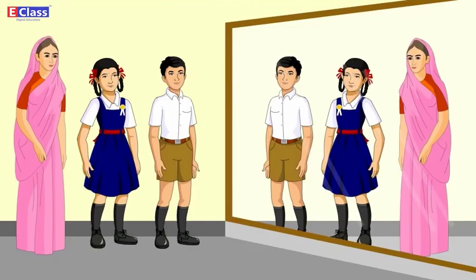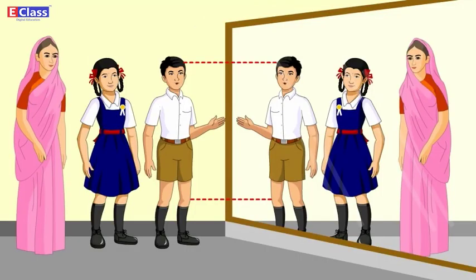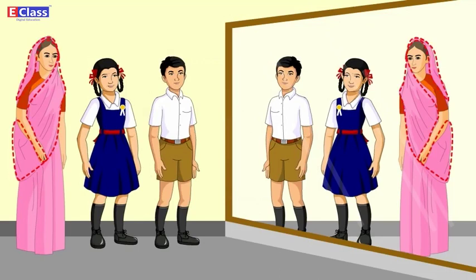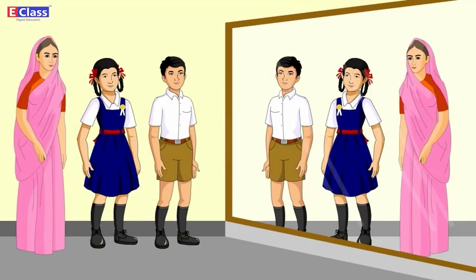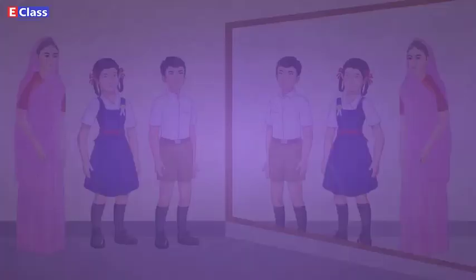My image in the mirror is as far behind in the mirror as I am in front of it. Teacher's pallu is on her left shoulder but in the mirror it appears to be on her right shoulder. We and our images are symmetrical with reference to the mirror.